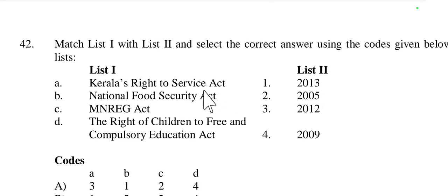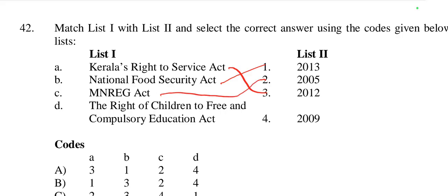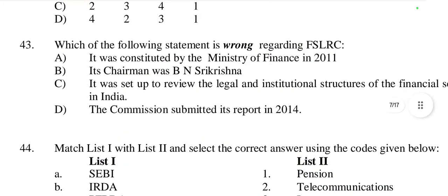Question 42 involves matching List 1 and List 2 for chronology. The Right to Service Act came in 2012, the National Food Security Act in 2013, MGNREGA in 2005, and the Right of Children to Free and Compulsory Education Act in 2009. So the correct matching gives option A as the right answer.